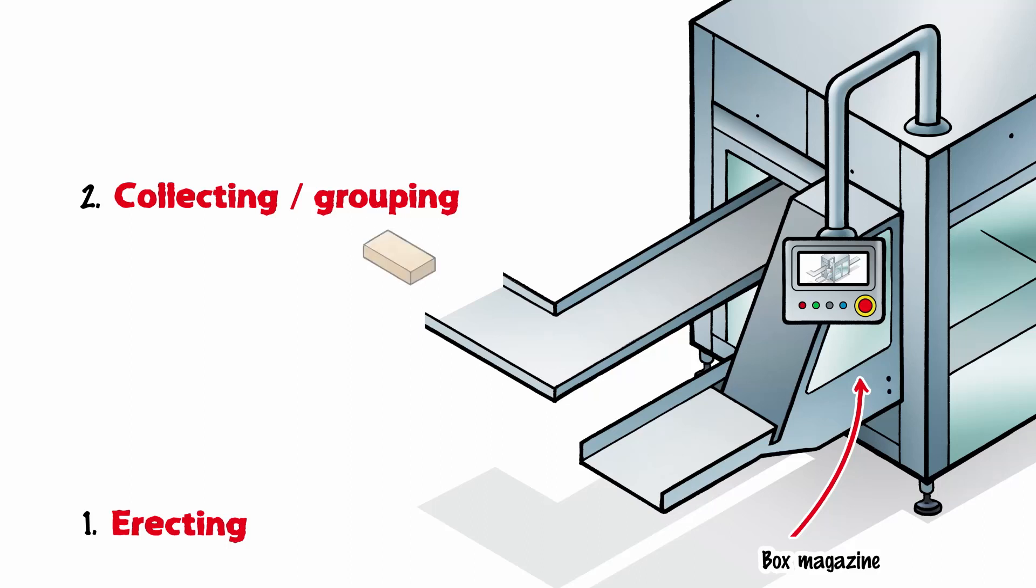A further conveyor belt feeds the products into the multi-packer. To speed up further processing, the products are then normally pre-grouped into individual layers or the contents of an entire box, for example.